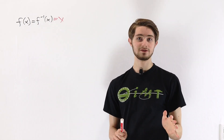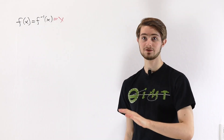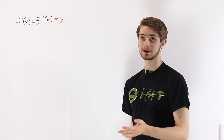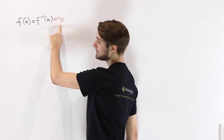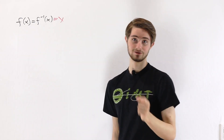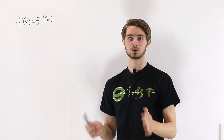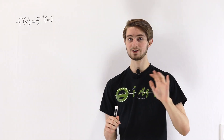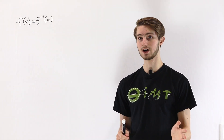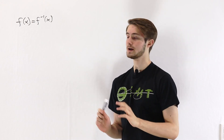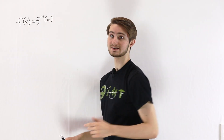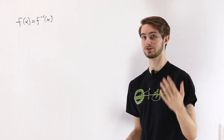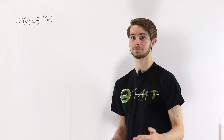However, in the specific case of the coffin problem that Black Pen Red Pen went through, this step actually is valid. The question is: what about that particular coffin problem made it so that we could set f(x) equal to x and get all of the solutions?